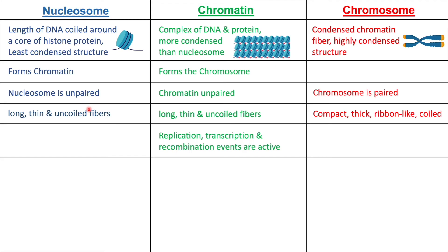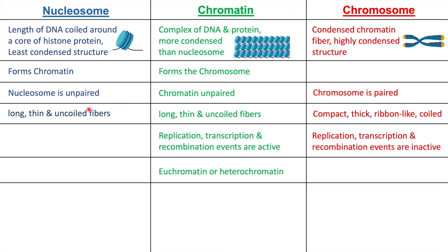Chromatin allows replication, transcription, and recombination events — meaning these events are active in chromatin. Whereas in the chromosome, replication, transcription, and recombination are inactive. Chromatin can be in either euchromatin form — loosely packed, where these events can be active — or heterochromatin form, which is tightly packed, where these events are inactive. Chromosomes are only present in a heterochromatin state, so replication, transcription, and recombination are always inactive in chromosomes because they are always in a very tightly condensed heterochromatin structure.